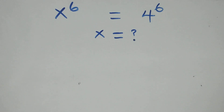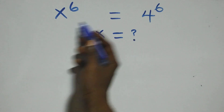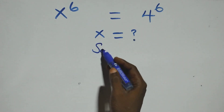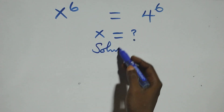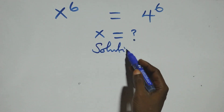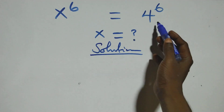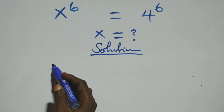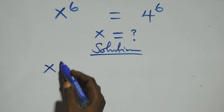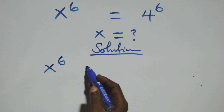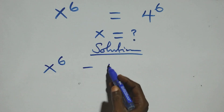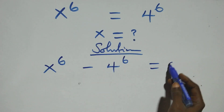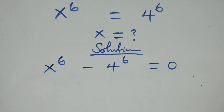Hello, you are welcome. How to solve this nice exponential equation. From what we have here, we take 4 raised to the power 6 to the left hand side, so we have x raised to the power 6 minus 4 raised to the power 6 equals to 0.